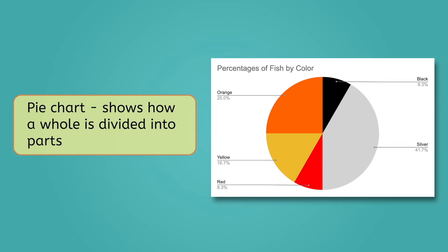Finally, a pie chart is used to show how a whole is divided into parts. For example, a pie chart could show us what percentages of fish in an aquarium are different colors. Okay, so now that we know about the types of graphs, how do we make our own?